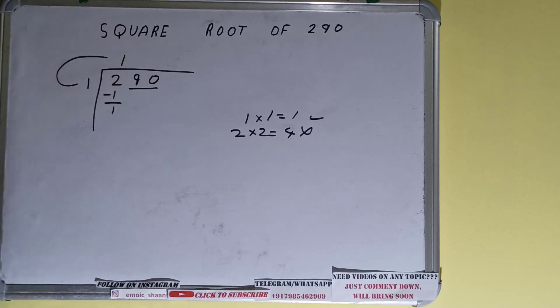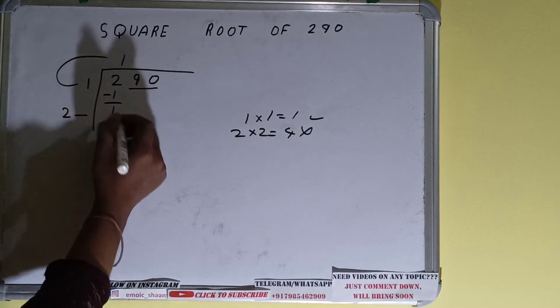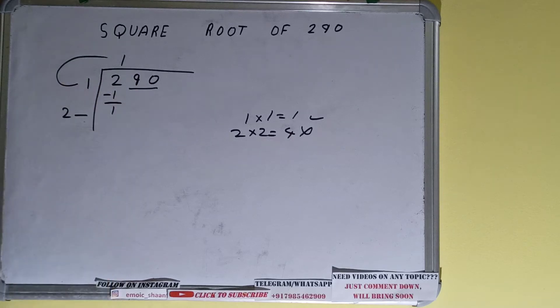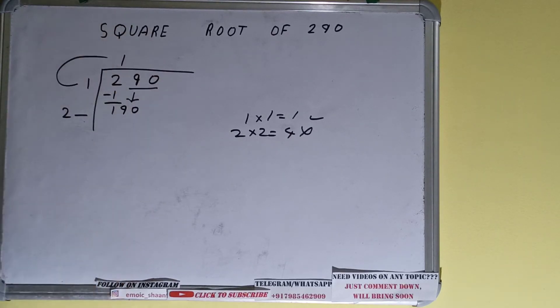So one here and one here will give one. Subtract it and one will be left. Now whatever is your divisor add it with what you multiplied with. We did 1×1 right, so 1 plus 1 will be 2. Keep one digit extra over here. We need to make this number big so that we can divide, so bring the next pair down and it will become 190.